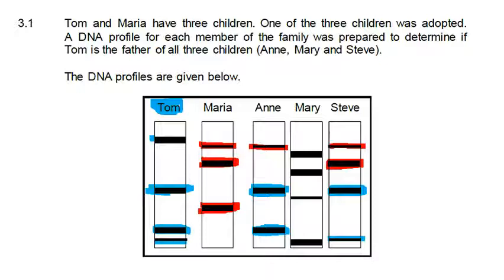Now we look at the offspring. Anne's three bands are all accounted for - she got one from her mom and two from her dad, so she is definitely one of the biological offspring. The same goes for Steve: Steve has four bands, two accounted for from mom and two from dad, which means Steve is definitely a biological offspring. But Mary doesn't have any bands that correspond with Tom or Maria, which makes Mary the adopted child.